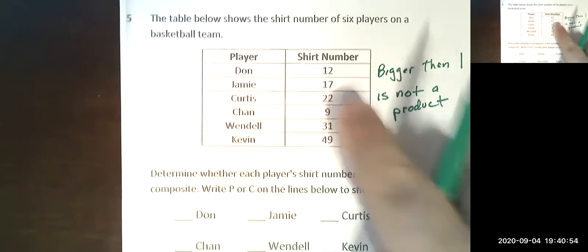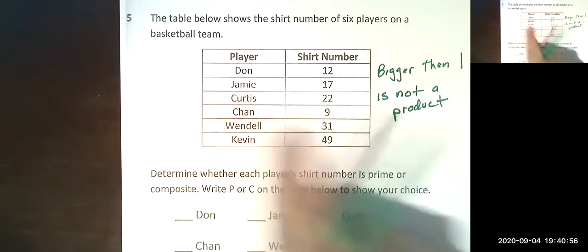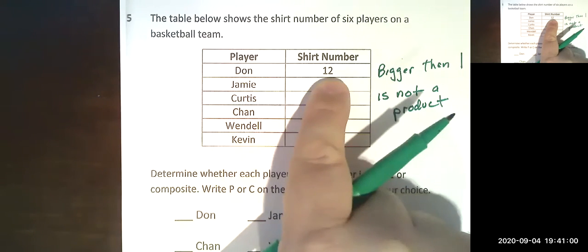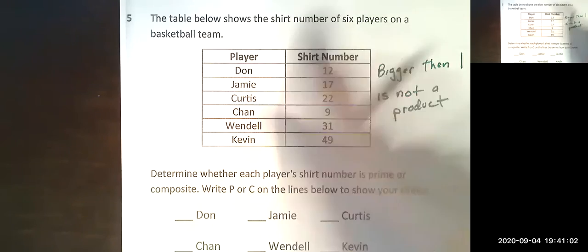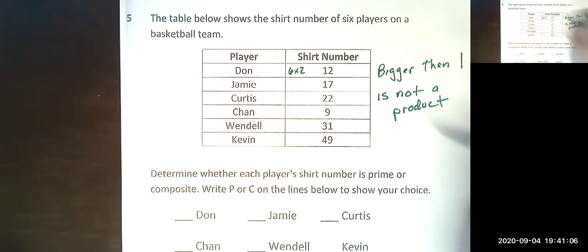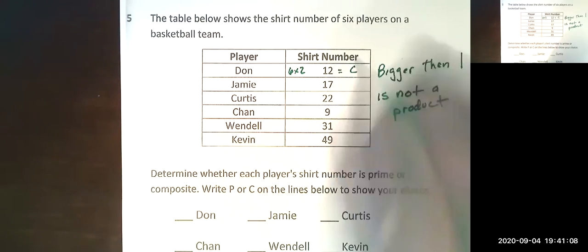So we have to go through. I'm going to go through and label them up here. So I'm going to look at Don. I need to think can I multiply two numbers bigger than one together to get 12? I can easily do that with 6 times 2, right? So that would make 12 a composite number.